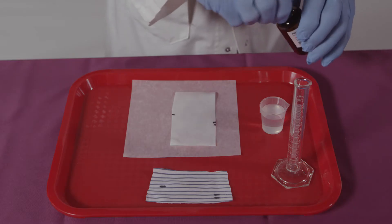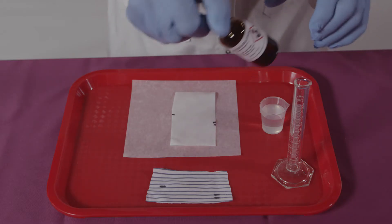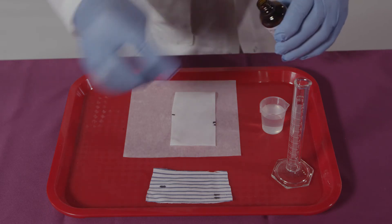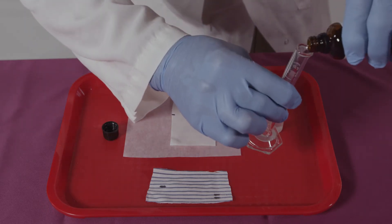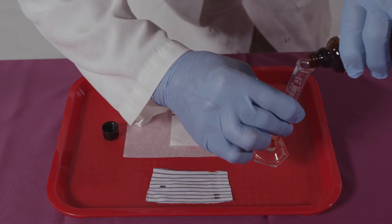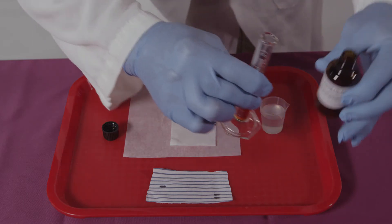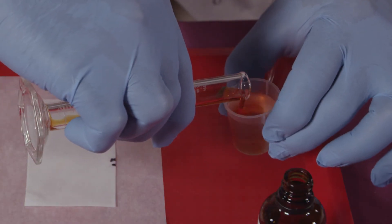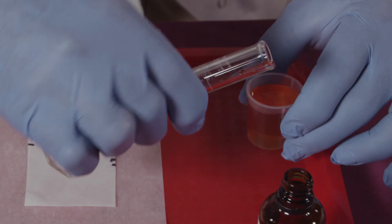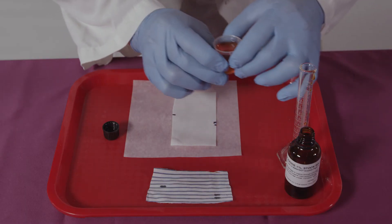A working solution of iodine must be prepared from the supplied stock solution. Two milliliters of stock iodine is added to 28 milliliters of water. This prepares 30 milliliters of working iodine solution.